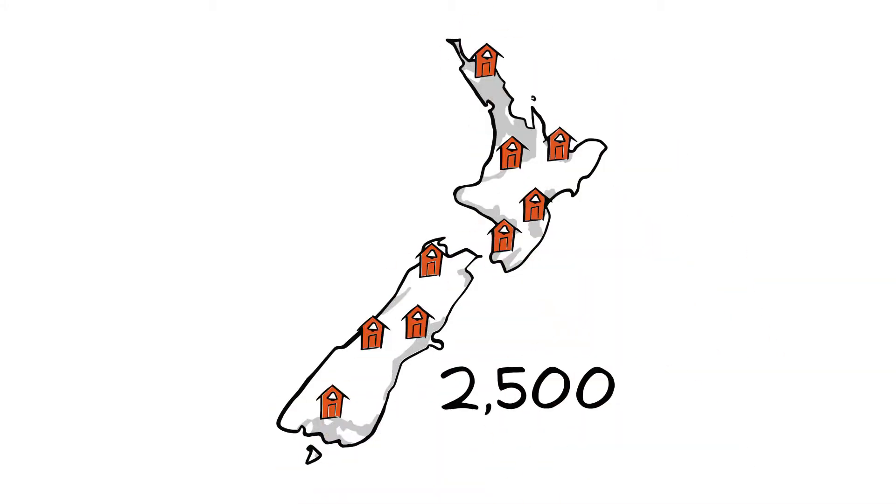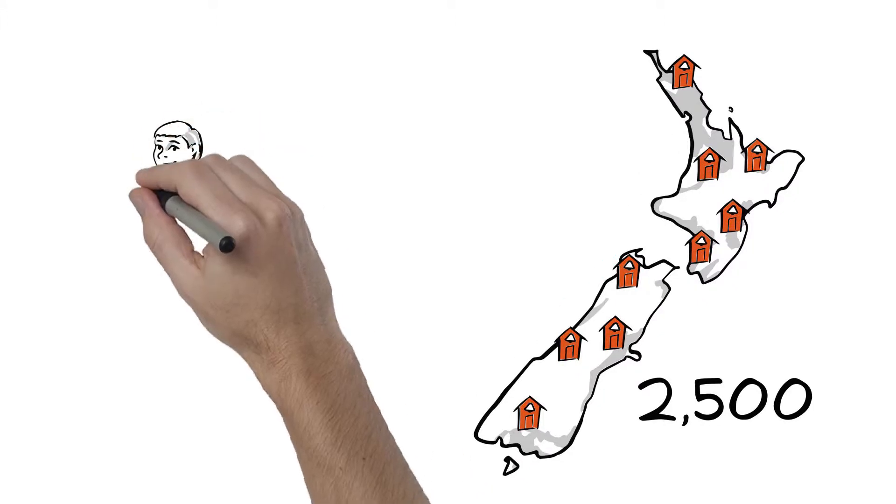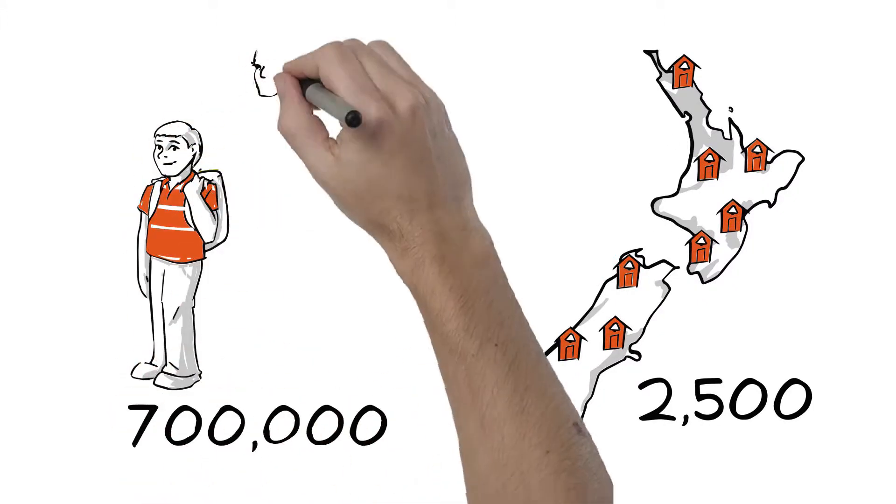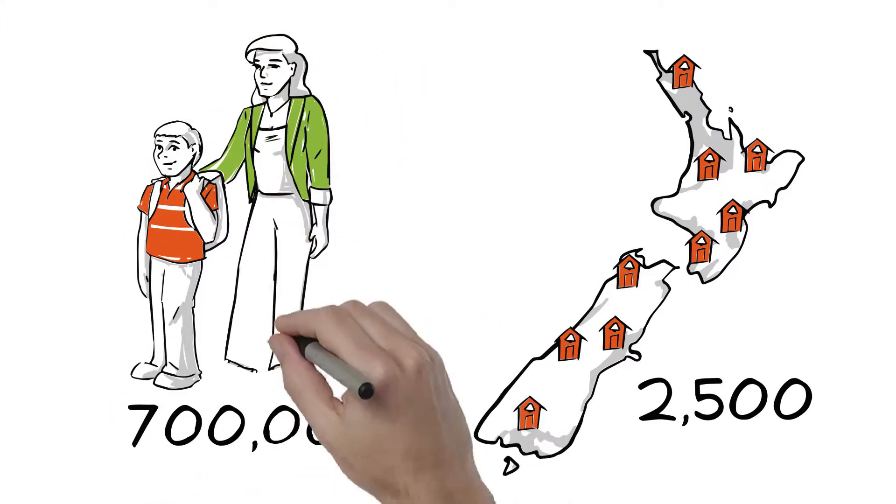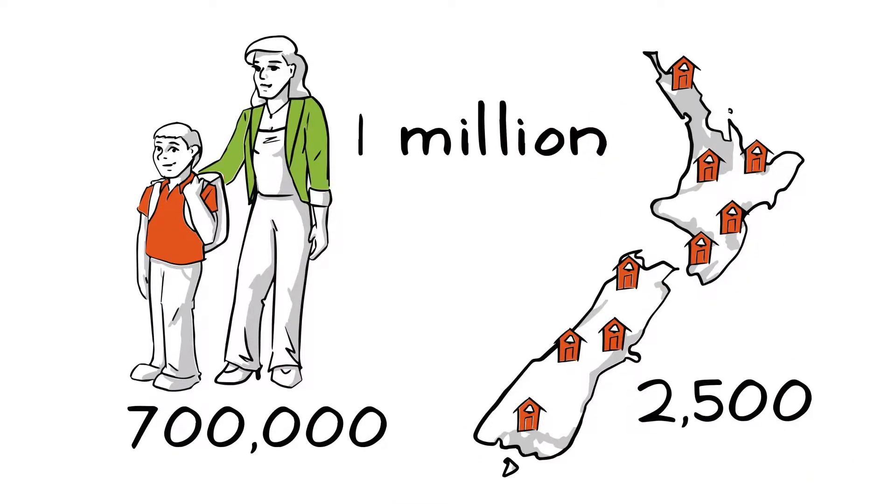There are two and a half thousand schools in New Zealand. They educate more than 700,000 young people on behalf of over 1 million parents. That's almost half of New Zealand's population.